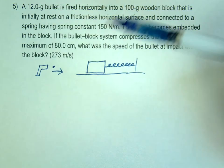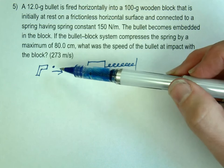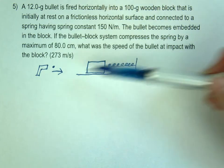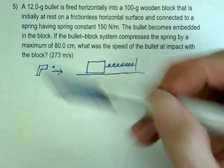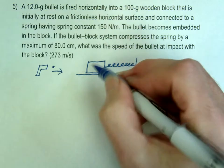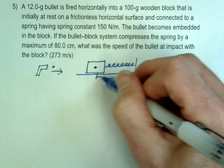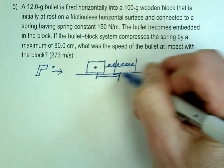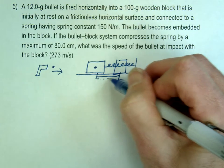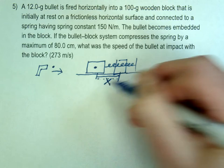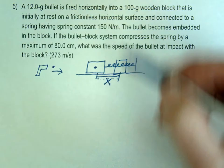OK, so for this problem, basically we're shooting a bullet into a block. You should definitely draw a picture when you do these out. So our bullet's going into the block, it's going to embed itself in the block, and then the block itself is going to move this way. Some distance, we'll just call it x.